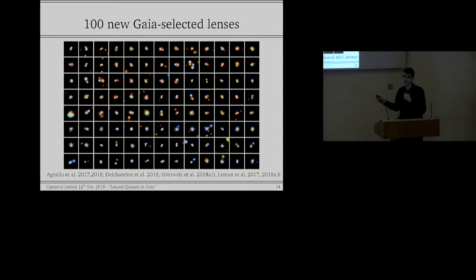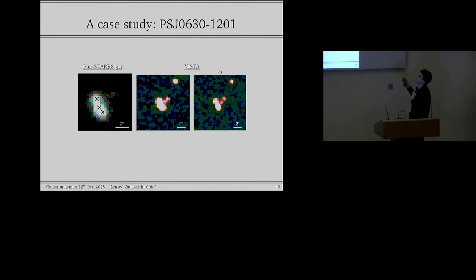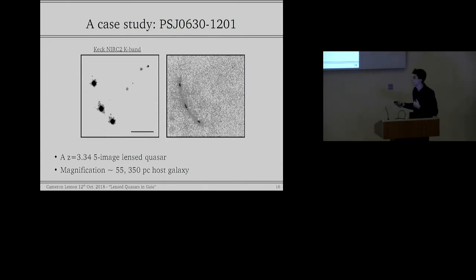So I'll finish up with one of the science cases that Gaia has made possible. This is in the system PSJ0630-1201. So on the left, I showed the Pan-STARRS GRI image of the system, and if Gaia didn't tell us that there were three Gaia detections here, we would think this might just be a star-forming galaxy, because it's so blended and it has similar colors to a quasar. However, since Gaia from the first data release told us there are three point sources here with low astrometric excess noise, and looking at the VISTA data also showed there might be some extended component here, which could be consistent with another quasar image, we confirmed that it was indeed a lensed quasar at redshift 3.34.